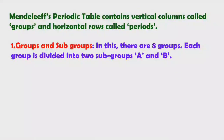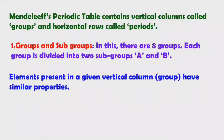In Mendeleev's periodic table there are eight groups, and each group is divided into two subgroups: A and B. Elements present in a given vertical column or group have similar properties.